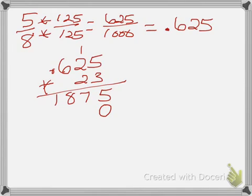We put our 0 down as a placeholder. 2 times 5 is 10. Put down the 0. Carry the 1. 2 times 2 is 4. Plus 1 is 5. 2 times 6 is 12.